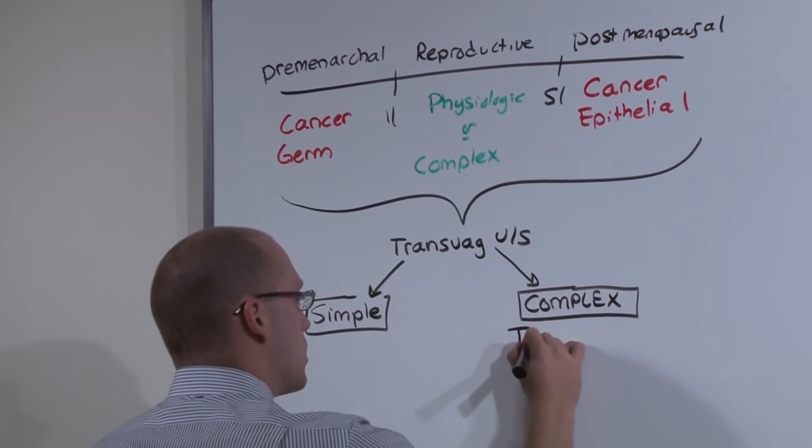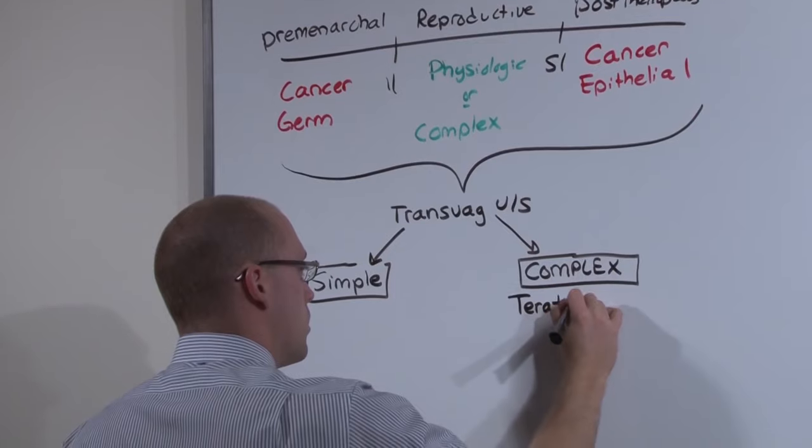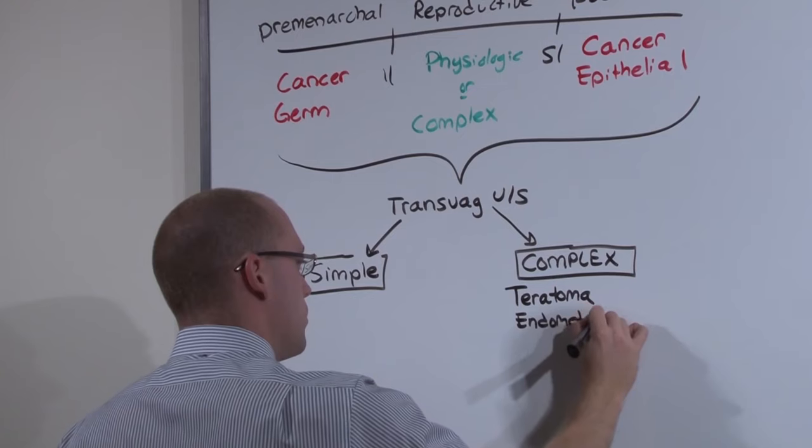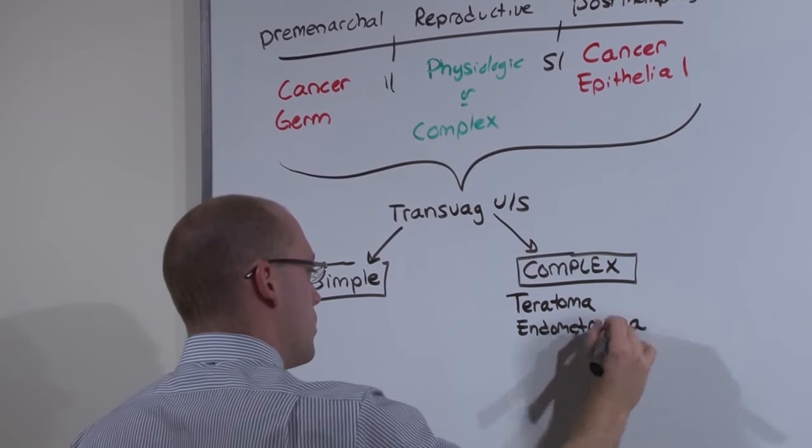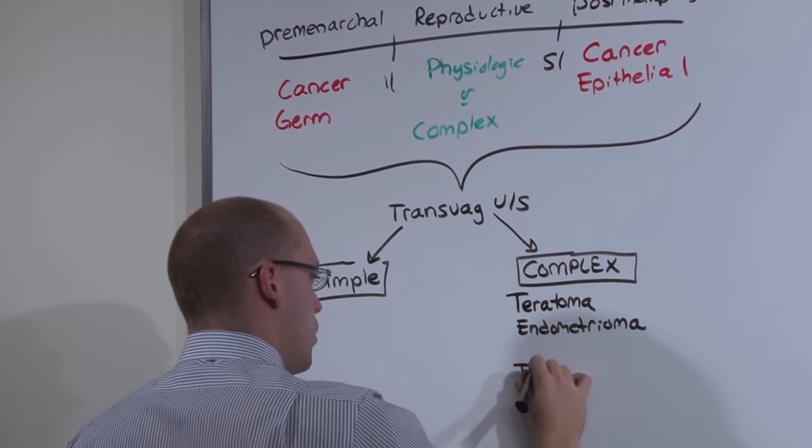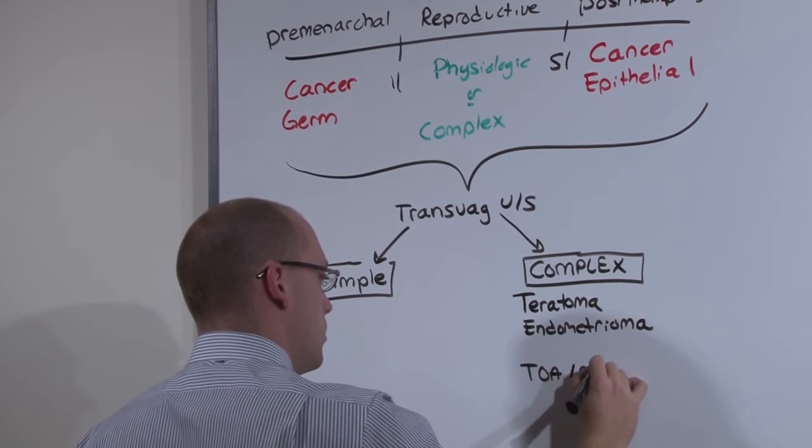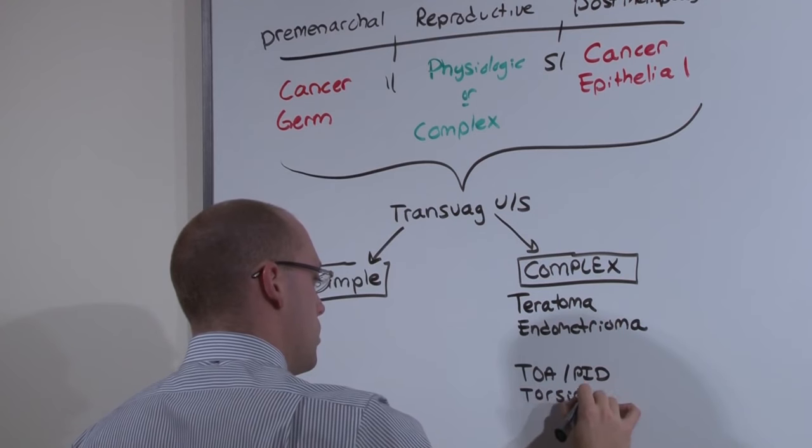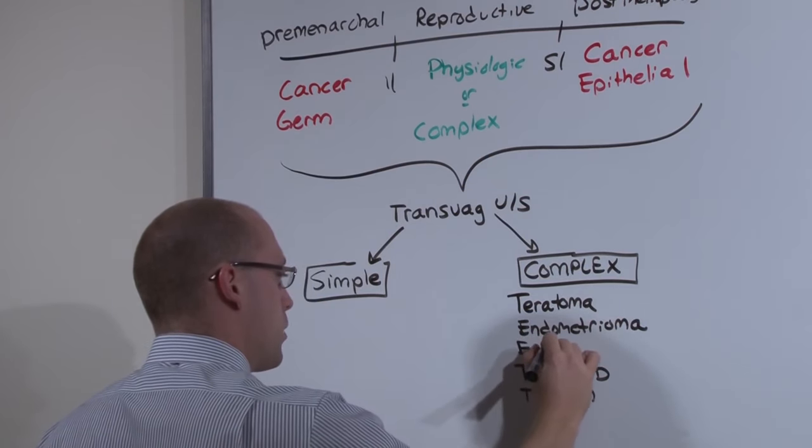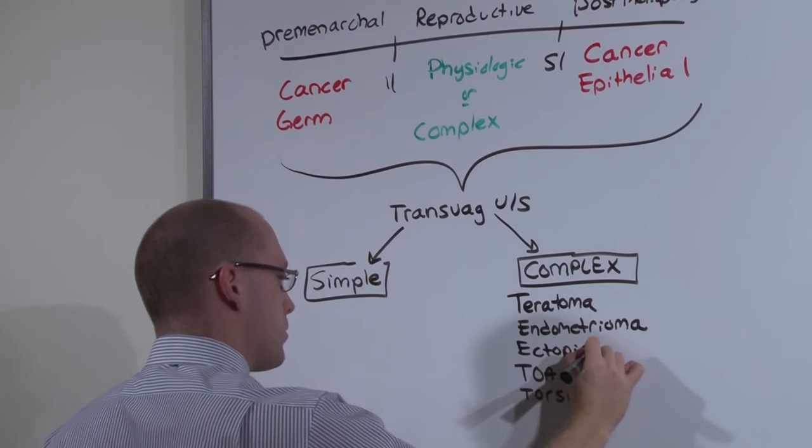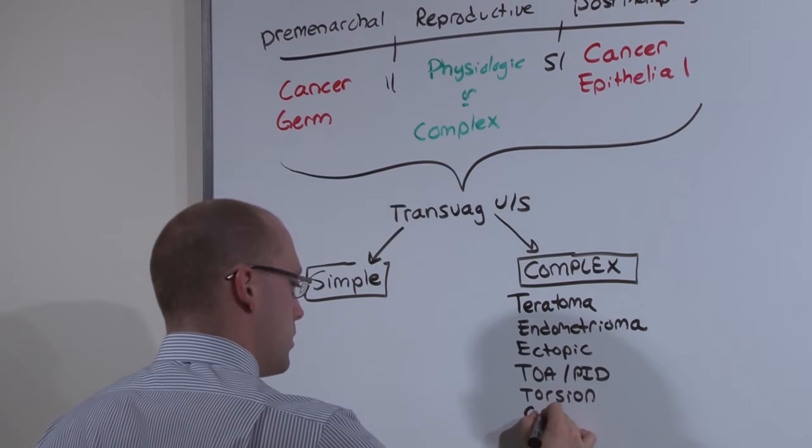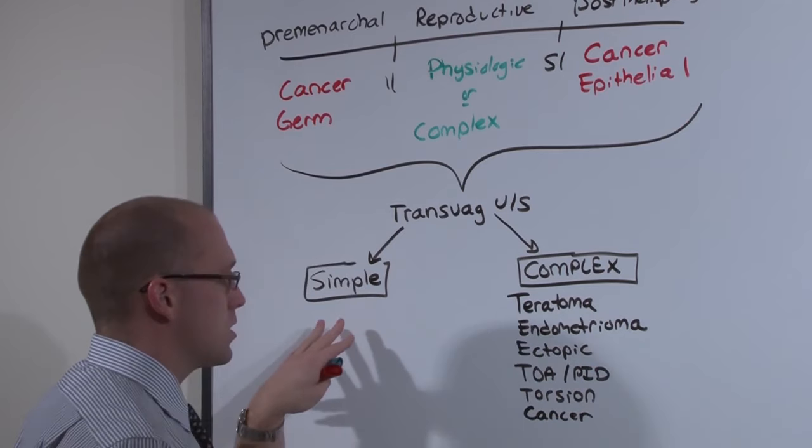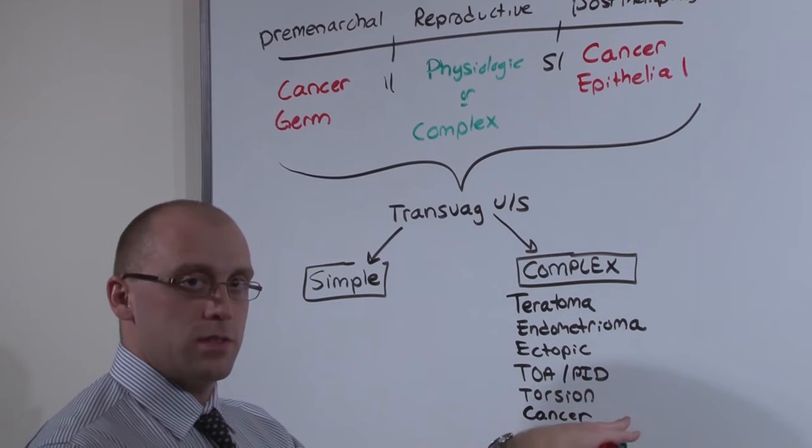That is the teratoma, endometrioma, the tubo-ovarian abscess, PID, torsion of the ovary, ectopic pregnancy, and cancer. But how do you tell if something is a simple or a complex cyst?